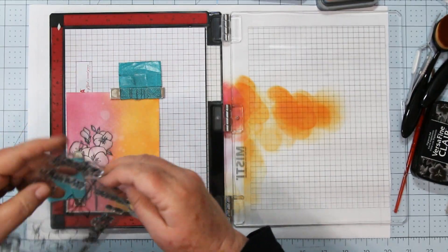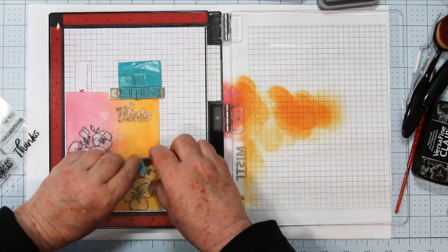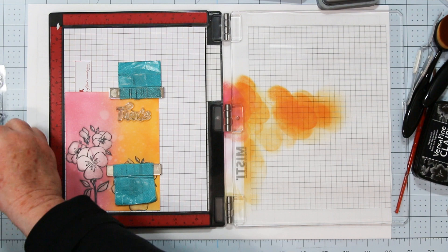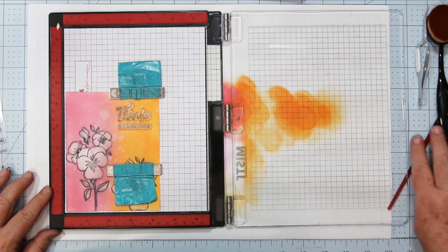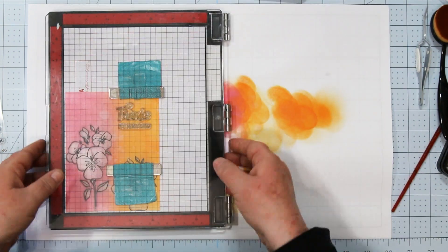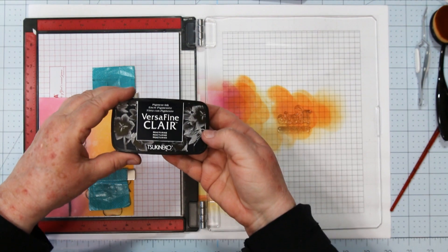So I'm popping the art piece back into the Misti so I can add my sentiments. And I'm choosing a large 'thanks' and then a small continuation. What does it say? 'For everything.' There's quite a few different sentiments in this set which is nice. And I'm using the VersaFine Clair Nocturne Black Ink to stamp the image.